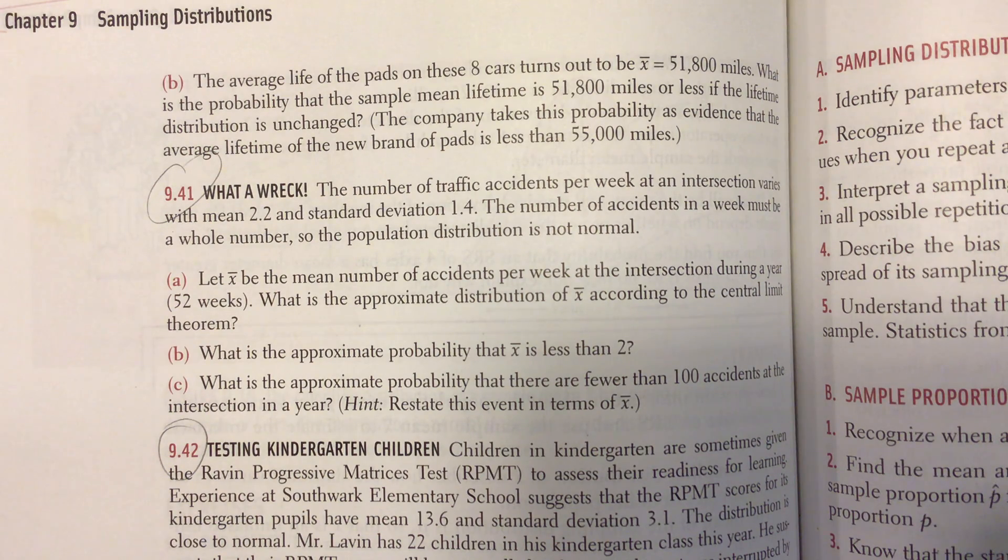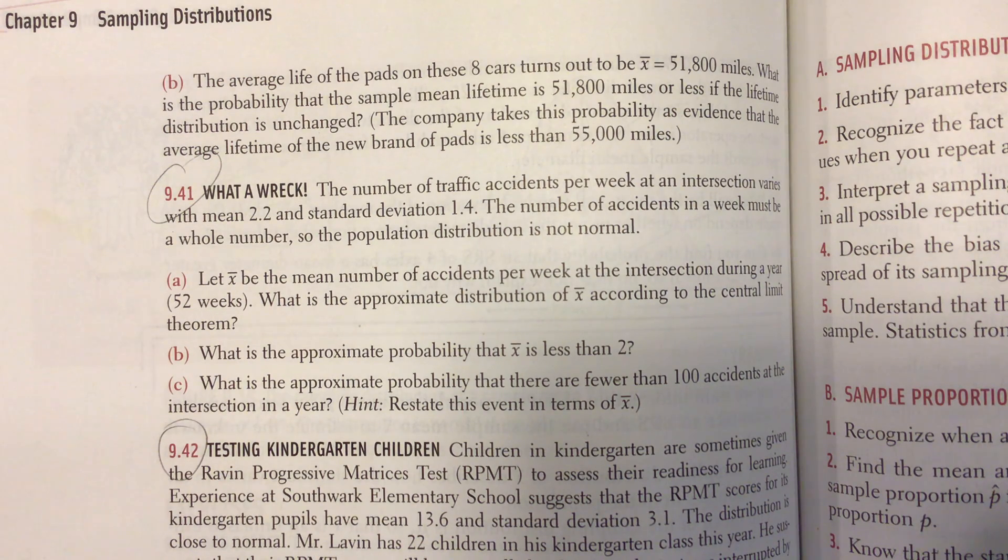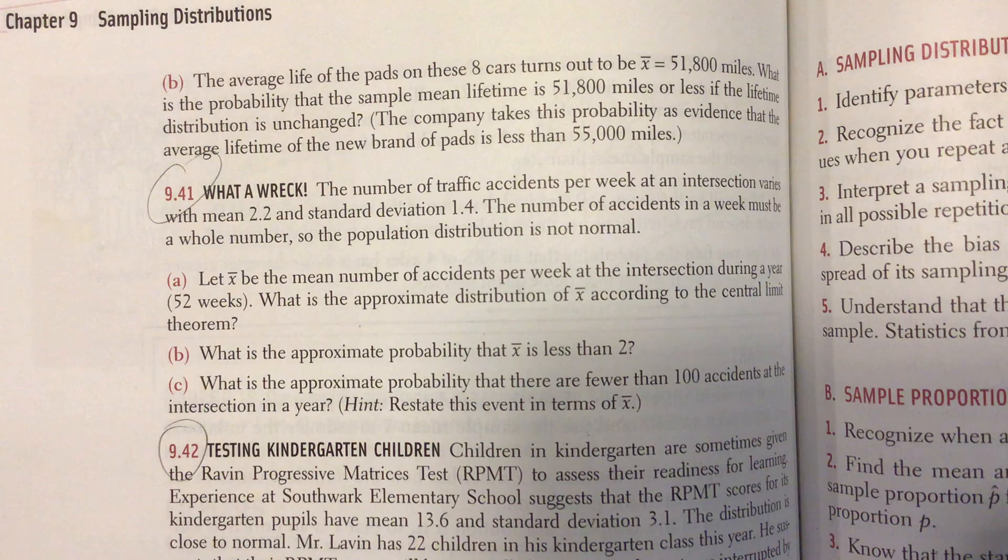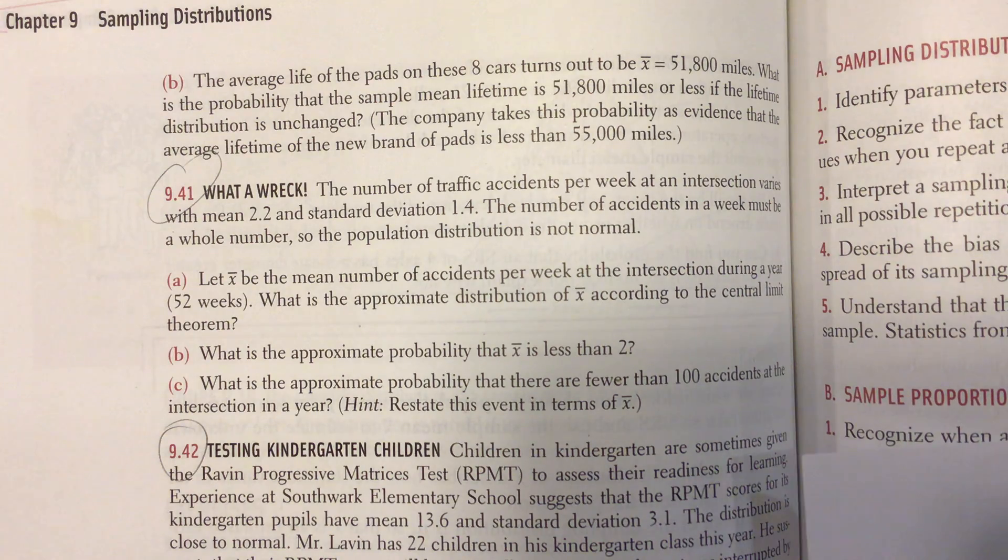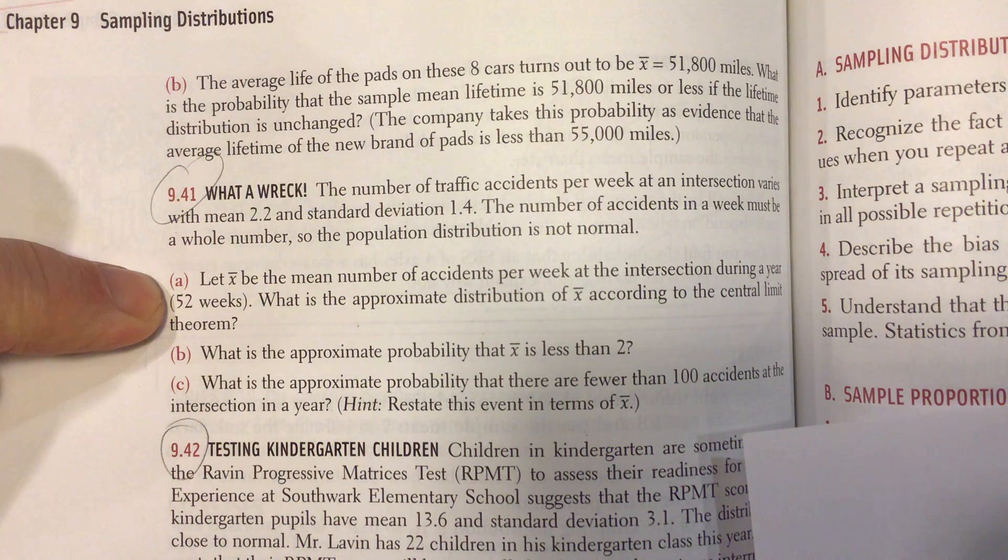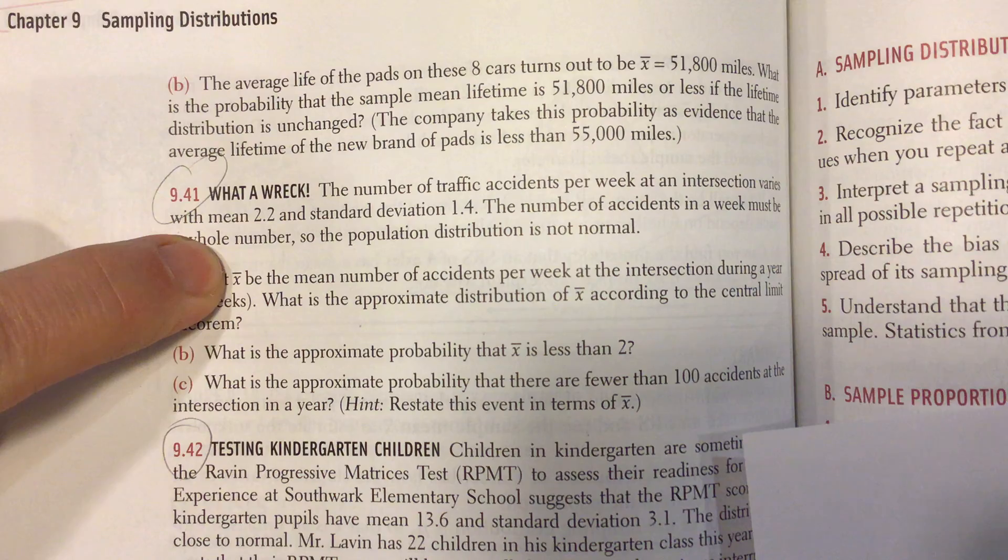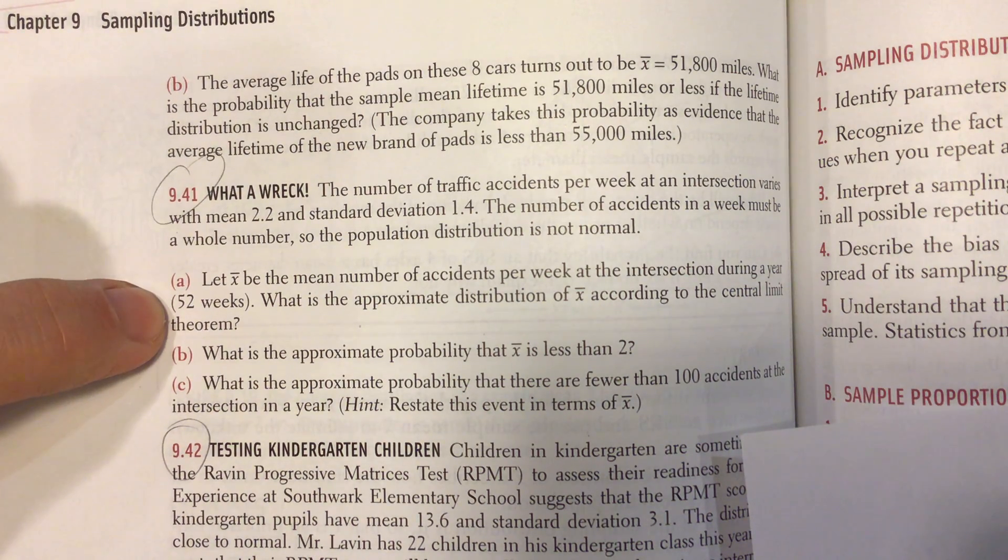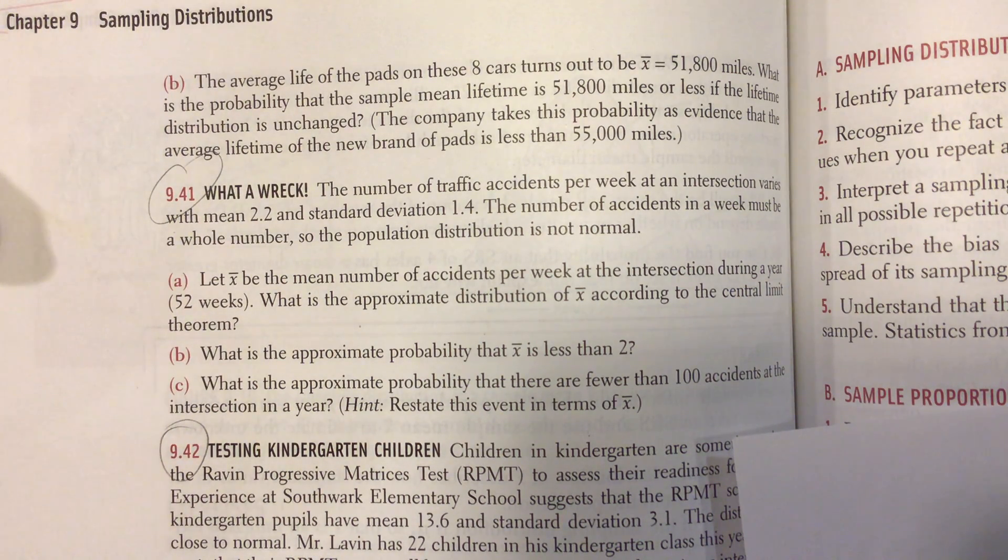Next question: The number of traffic accidents per week at an intersection varies with a mean of 2.2 and a standard deviation of 1.4. The number of accidents in a week must be a whole number, so the population distribution is not normal. This is true. Remember, a normal distribution is a continuous distribution. But I have a sneaky feeling we're going to be able to treat it as if it were normal. Let X bar be the mean number of accidents per week at the intersection during a year.